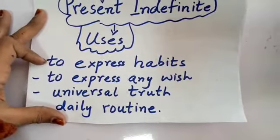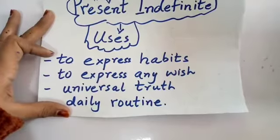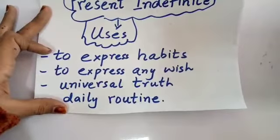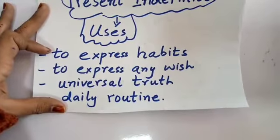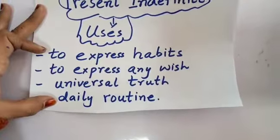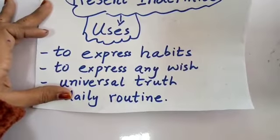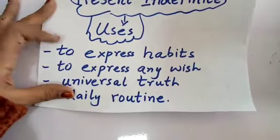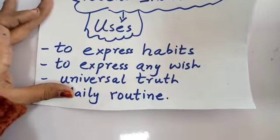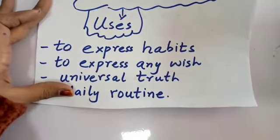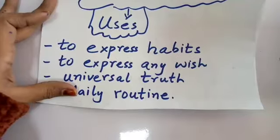The second use is to express any wish — humari koi khwahish ho. For example: 'I brush my teeth twice a day' — that is a habit. 'I want to be a doctor' or 'She wants to be a pilot' — that is a wish. For these we use present indefinite tense.